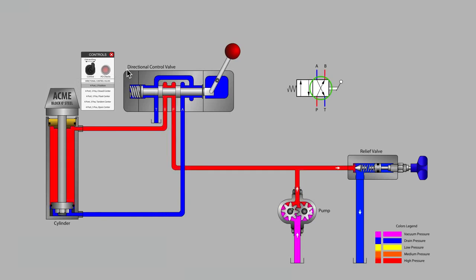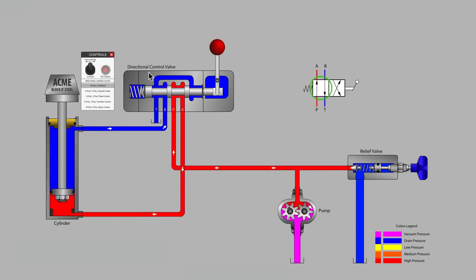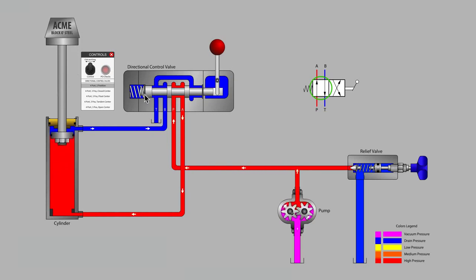The spring inside this particular valve returns the valve spool to the P-to-A position whenever the lever is released. Notice that the relief valve is taking care of limiting maximum system pressure whenever the cylinder is deadheaded against the fully extended or fully retracted position.